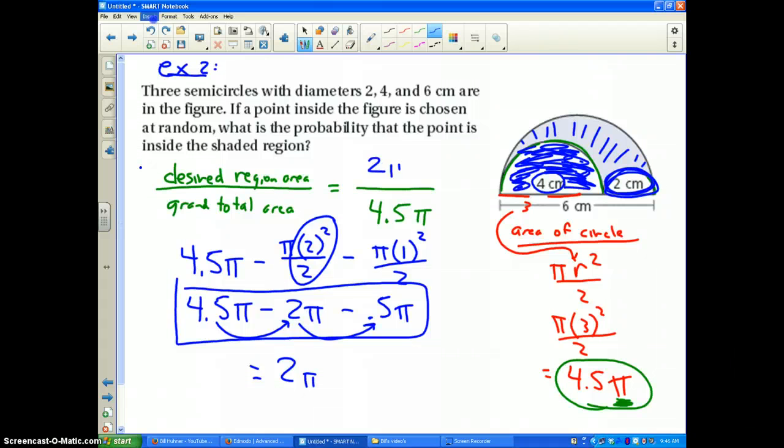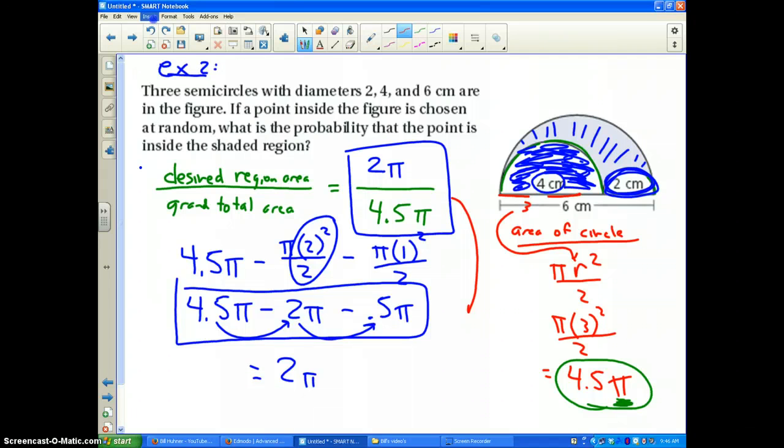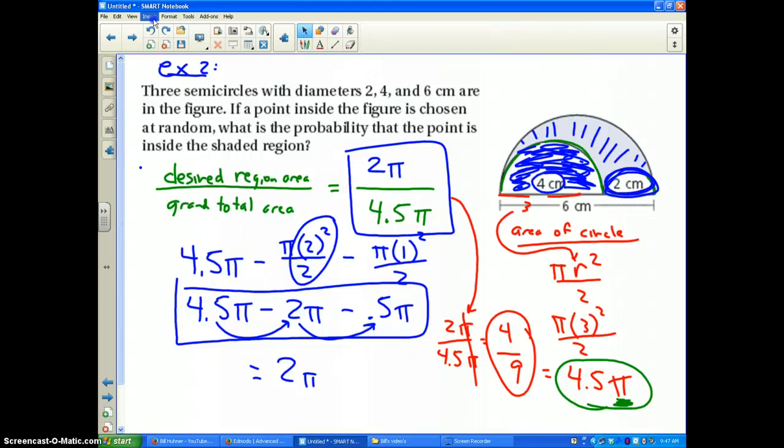What do I get when I do that? It looks like 4.5 minus 2 is 2.5, minus another half equals 2 pi. So the top is 2 pi. Now all I've got to do is reduce it. 2 pi divided by 4.5 pi. The pi's cancel out, which leaves me 2 over 4.5, which is the same as the fraction 4/9. That is my probability of hitting the shaded region on that target.